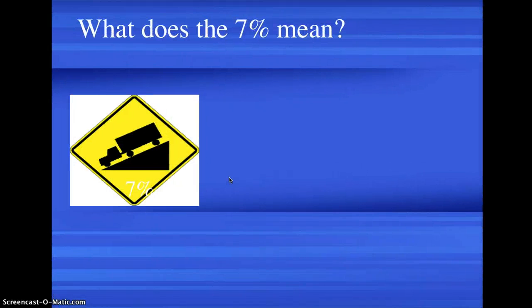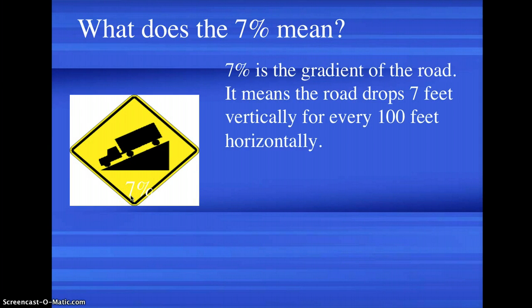Say you see a symbol or picture like this. What does 7% mean? 7% in this picture is the gradient of the road.